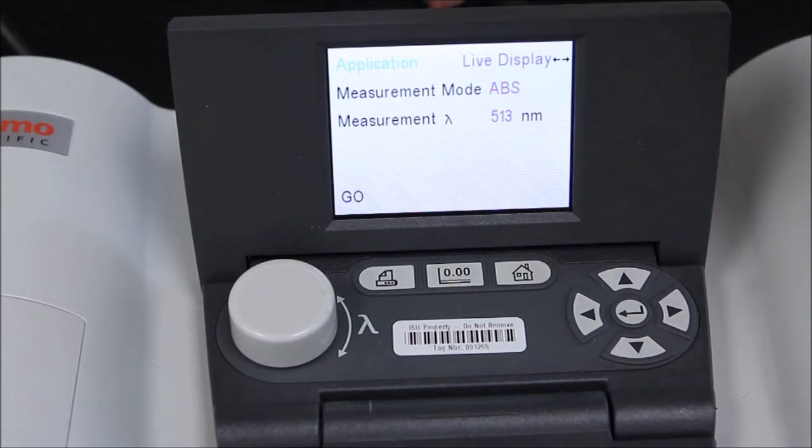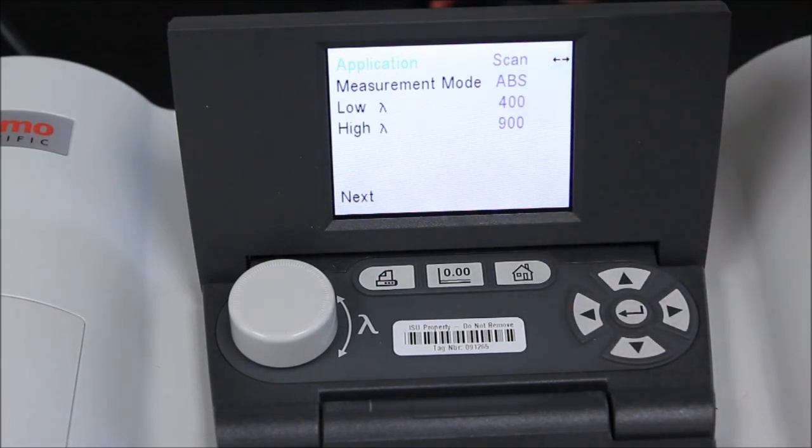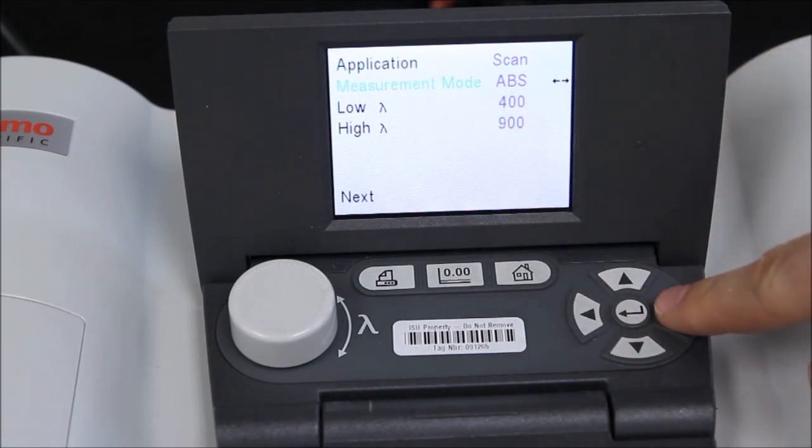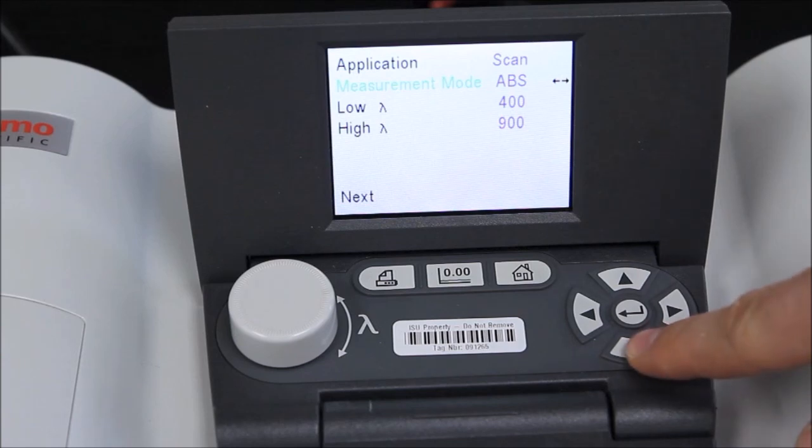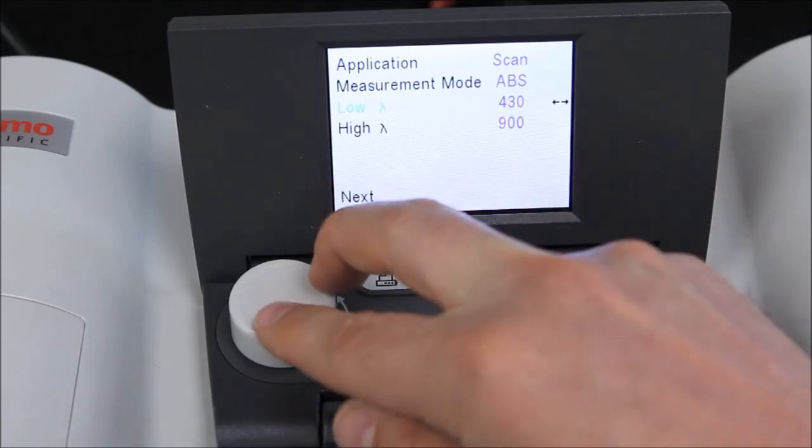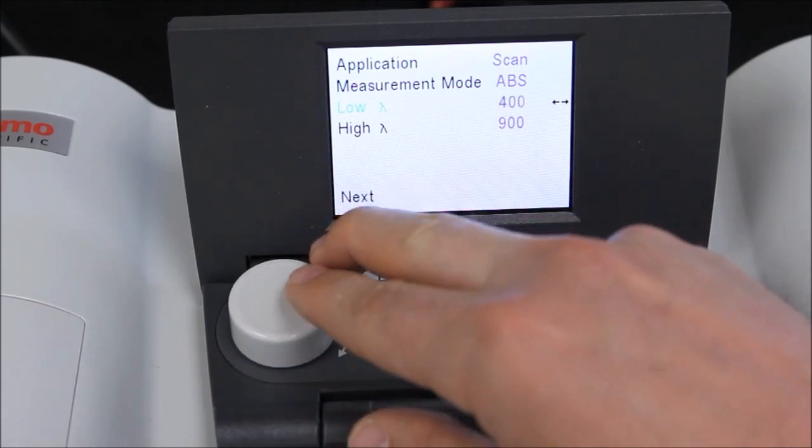If we don't know the optimal wavelength for our experiment, we should start with the Scan application, where we have the option between absorbance and percent transmittance output, as well as defining the low and high end of our wavelength scan. By turning the knob clockwise or counterclockwise, we can increase or decrease the wavelength in 10 nanometer increments.